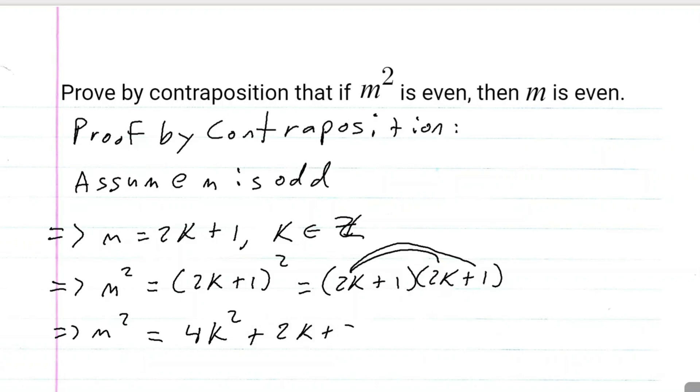So we have 2k plus 2k plus 1, because 2k times 2k is 4k squared, 2k times 1 is 2k, 1 times 2k is 2k, and 1 times 1 is 1.